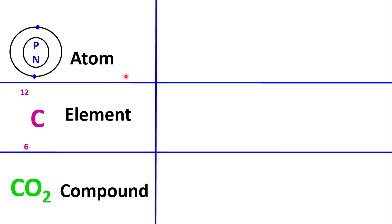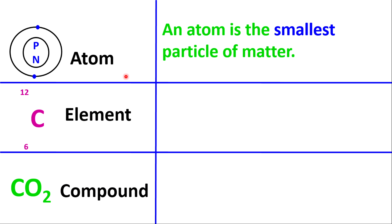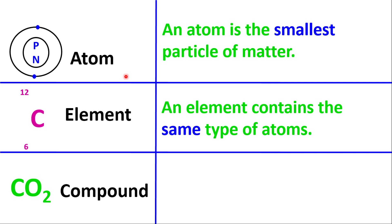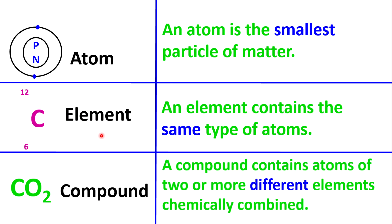An atom can be defined as the smallest particle of matter, which means that anything that has mass and takes up space contains atoms. An element contains the same type of atoms — so the element carbon will contain only carbon atoms. And a compound contains atoms of two or more different elements chemically combined. So within the compound you will see two or more different elements. For carbon dioxide, for example, you'll see two different elements, and they are chemically combined.